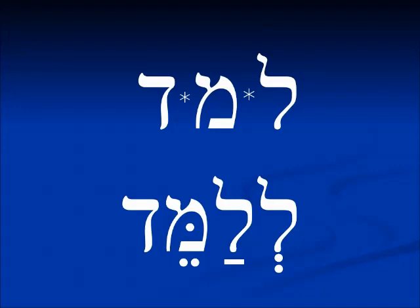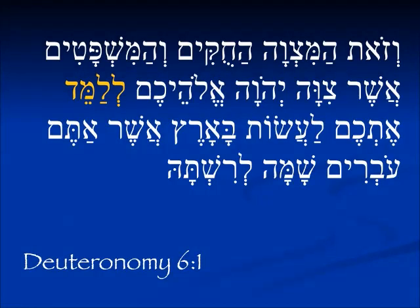Moving on to a Pi'el form, we have the root l'mah. Remember, l'mah forms in the Pa'al mean 'to learn,' but in the Pi'el it means 'to teach.' In the Pi'el, the present tense is milamed, milamedet — starts with Mem with a Patah and Tzereh vowel configuration. So in the infinitive we see l'lamed. In Deuteronomy 6:1: V'zot ha-mitzvah, ha-chukim, ha-mishpatim, asher tzivah Yehovah Elohechem, l'lamed etchem la'asot ba'aretz — this is the commandment, these are the statutes and judgments which Yehovah your God commanded, to teach you to do these things. Moses is responsible l'lamed, to teach the people.